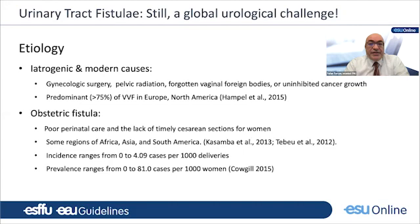Today vesicovaginal fistula remains a challenging urological problem. There are two main etiologies: iatrogenic and modern causes — including gynecologic surgery, pelvic radiation, forgotten vaginal foreign bodies, or uninhibited cancer growth. More than 75% of cases in Europe or North America are attributed to iatrogenic causes. However, in some regions of Africa, Asia, and South America, the most common etiology is obstetric, where poor perinatal care and lack of access to cesarean sections play the most important role.